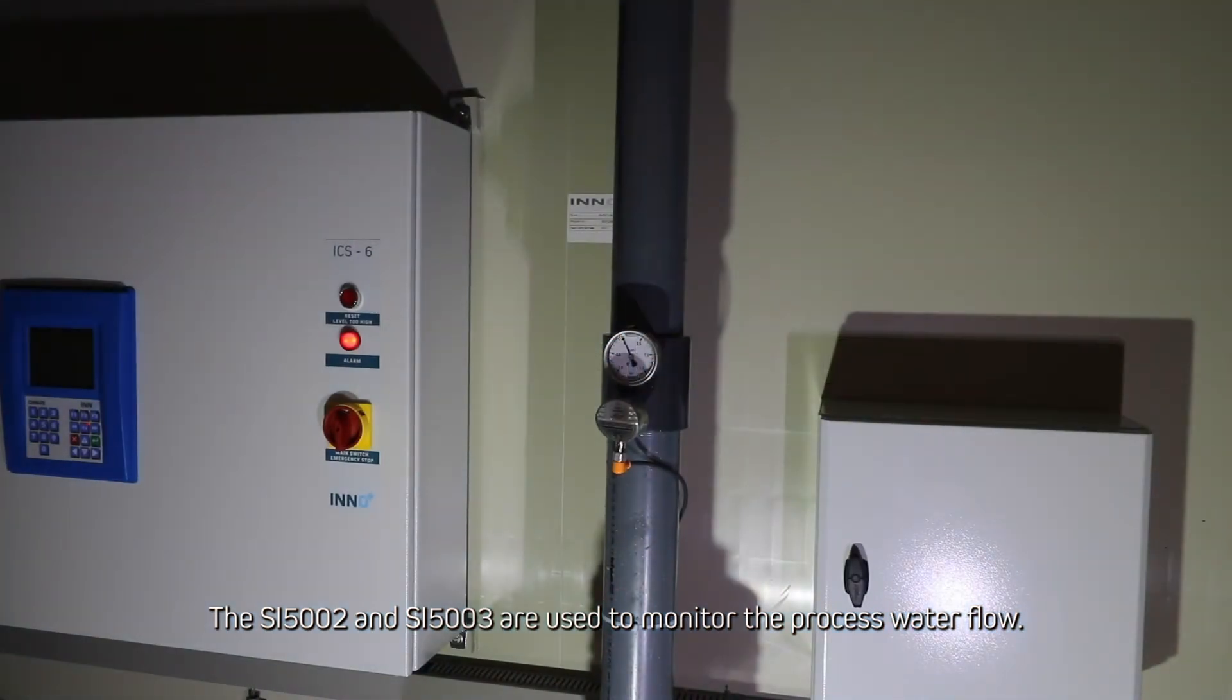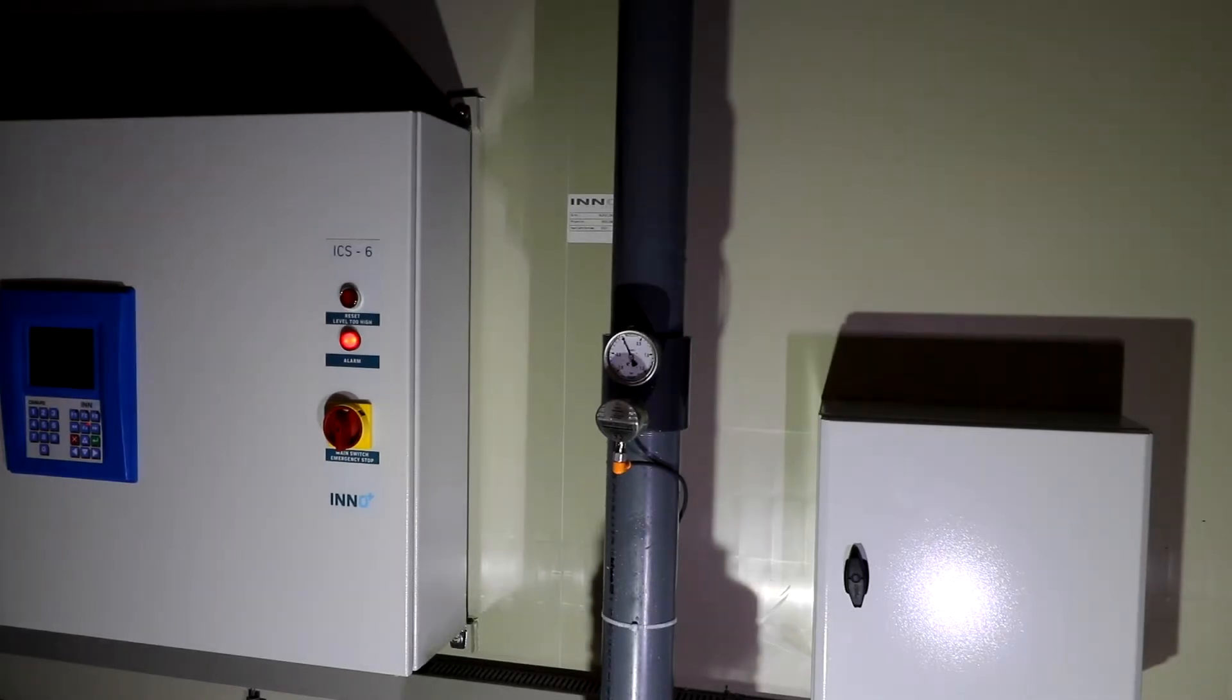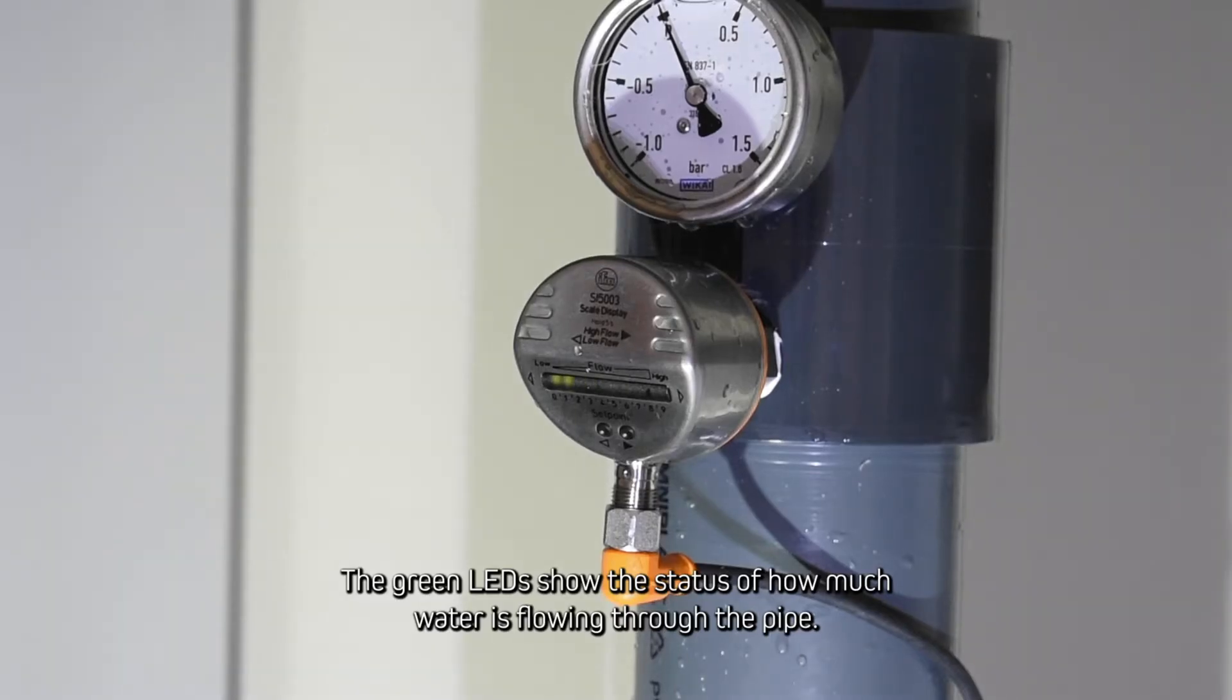The SI5002 and 5003 are used to monitor the process water flow. The green LEDs show the status of how much water is flowing through the pipe.